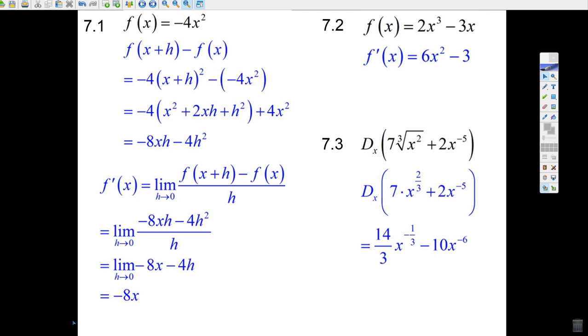Here's the first calculus question in paper 1, question 7. The first one is a standard first principles thing, where you use first principles to find the derivative of f of x equals minus 4x squared.